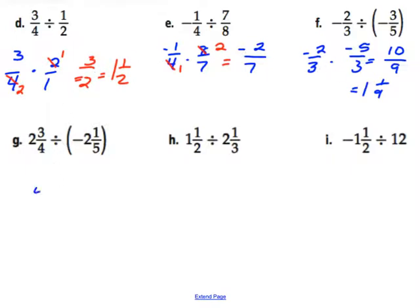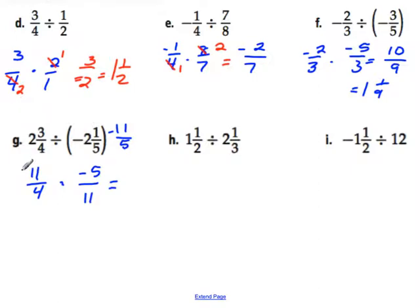For problem G: converting gives us 8 plus 3 which is 11 fourths. Change to multiplication. The other mixed number as an improper fraction is 11 fifths, and since it's negative, when we flip it we get negative 5 elevenths. The 11s cancel — dividing by 11 gives both a 1. Multiplying across gives negative 5 over 4, which equals negative 1 and 1 fourth.